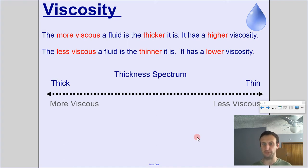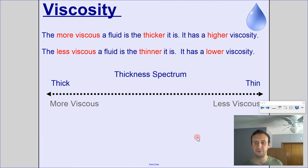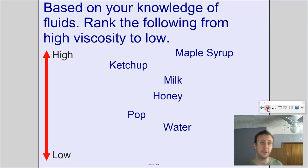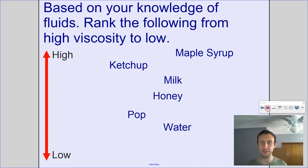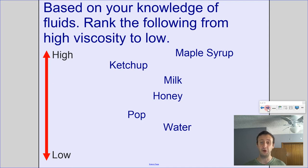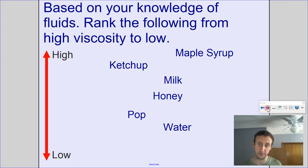We have a viscosity spectrum going from very thick or viscous to less viscous, or thin. Based on your knowledge of fluids, could you rank the viscosity of the following things from high viscosity, meaning thick, to low viscosity, meaning thin — in other words, fluids that can flow very easily?